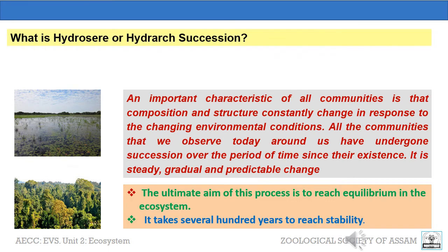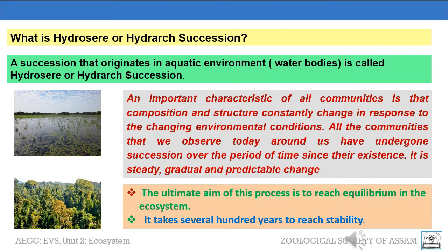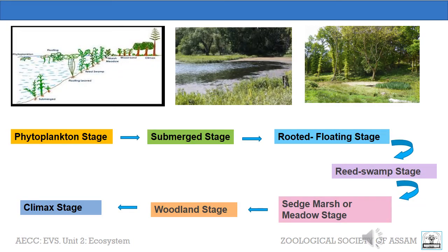Now, what is Hydrosere or Hydrosere succession? A succession that originates in an aquatic environment, i.e., water bodies, is called Hydrosere or Hydrosere succession. The plant communities pass through several developmental stages in a definite sequence from simple to complex. After several changes, a habitat becomes occupied by the most tolerant species, which forms a climax community. The different stages of plant succession taking place at a particular habitat are called a Sere.